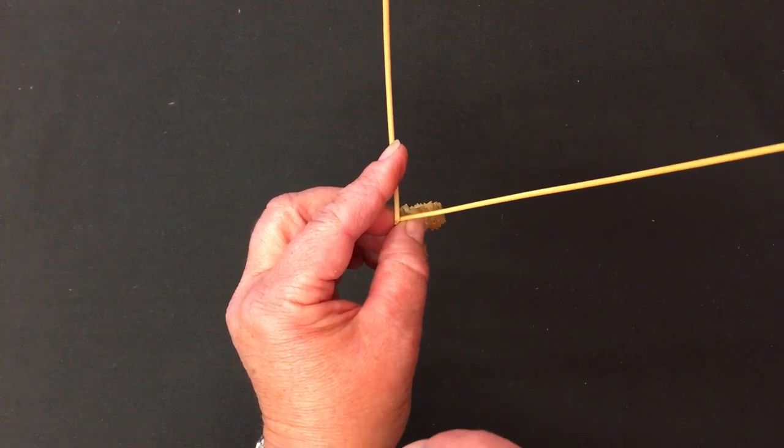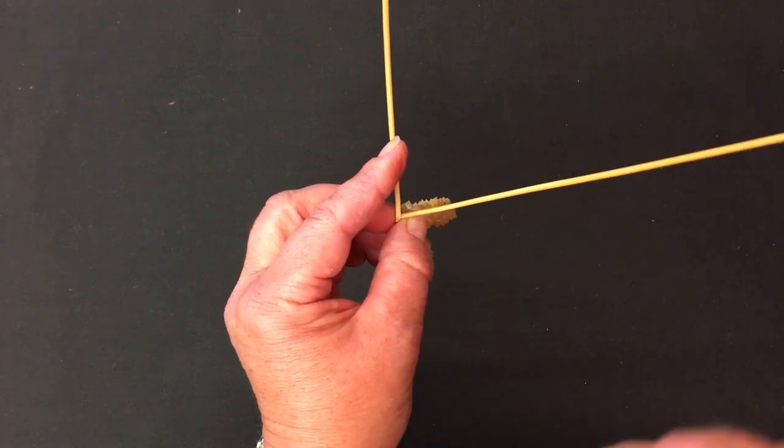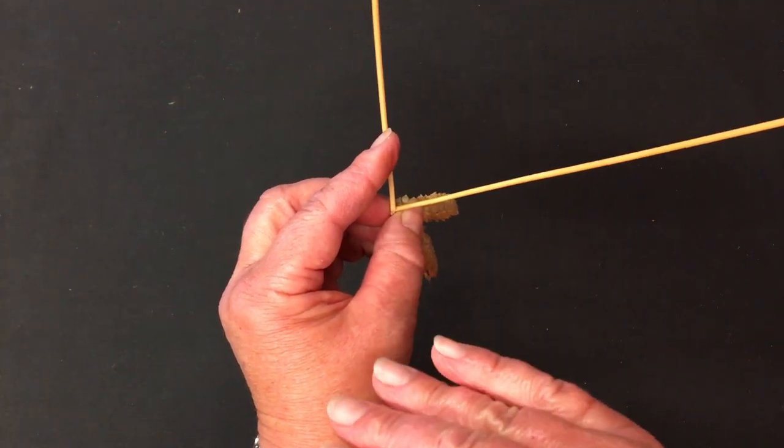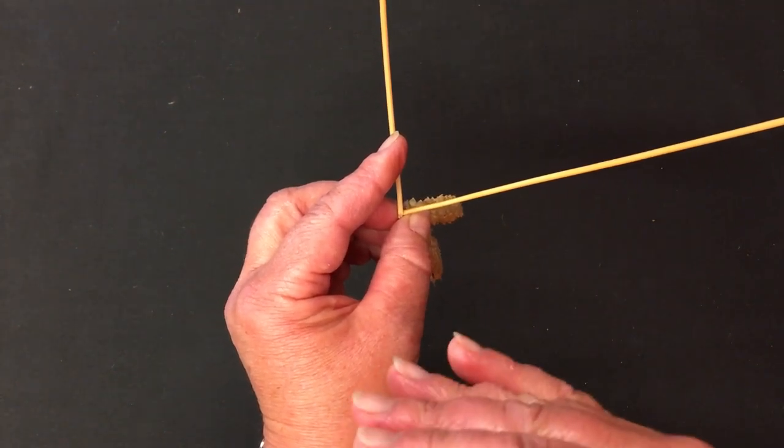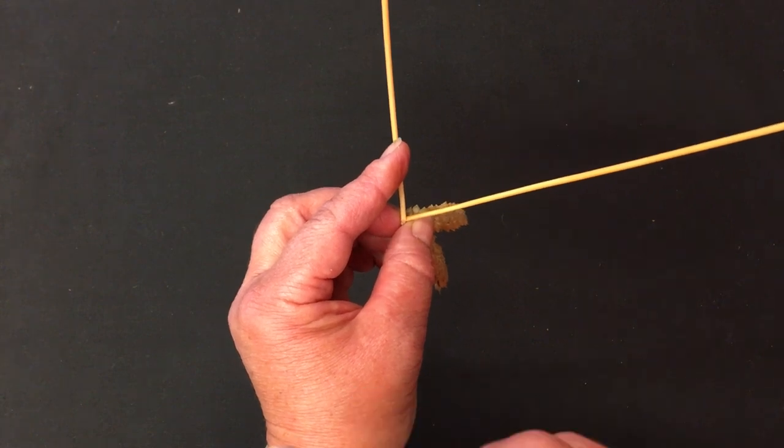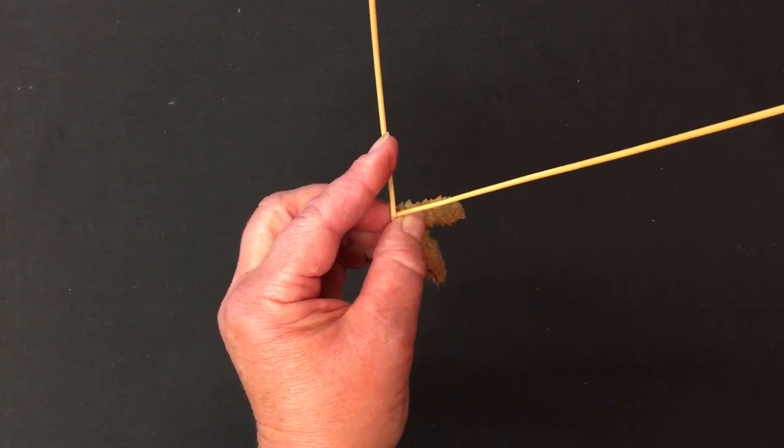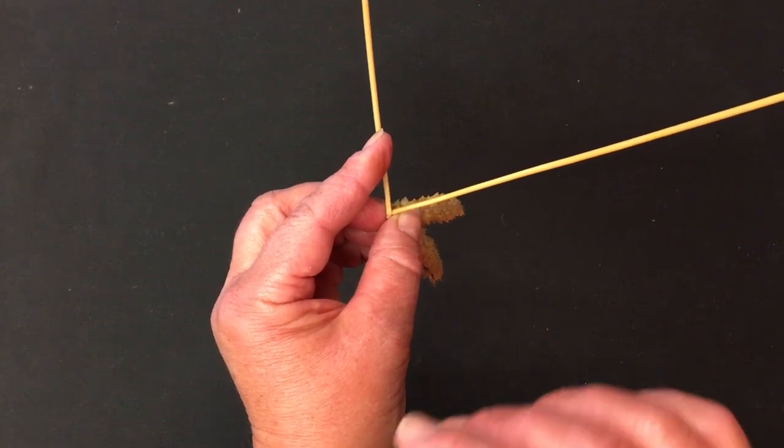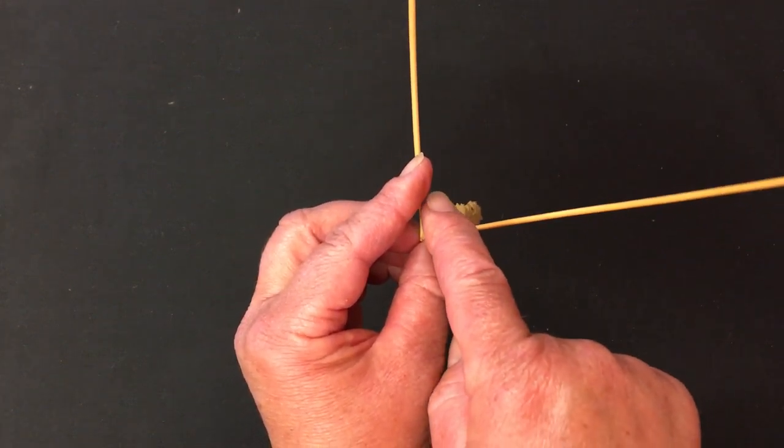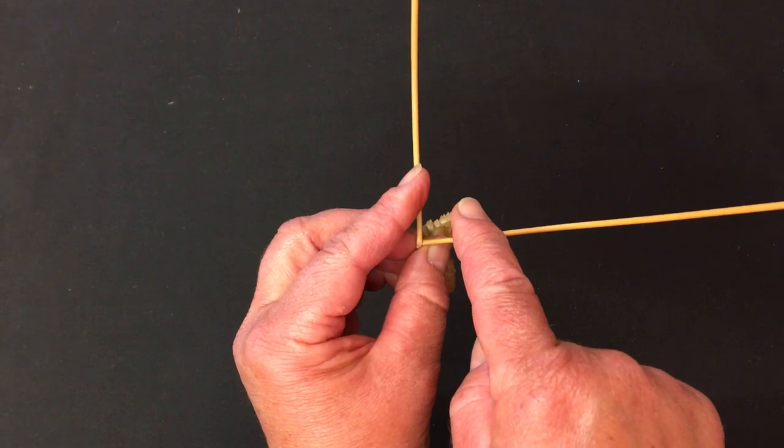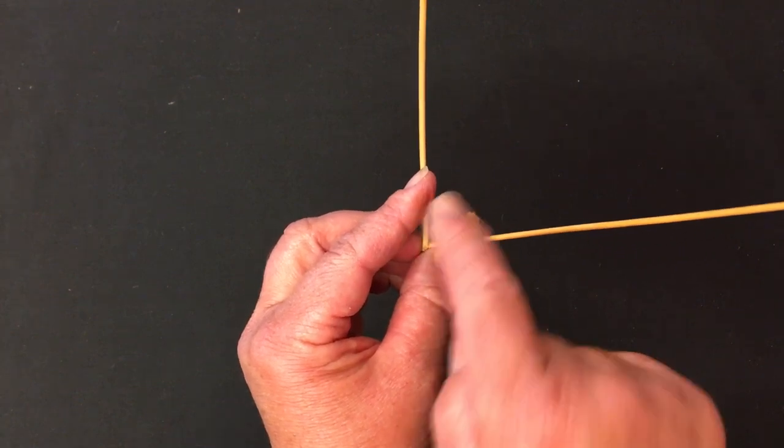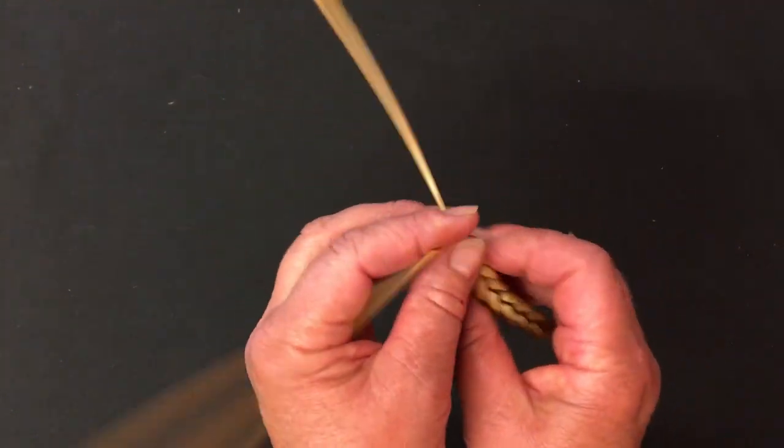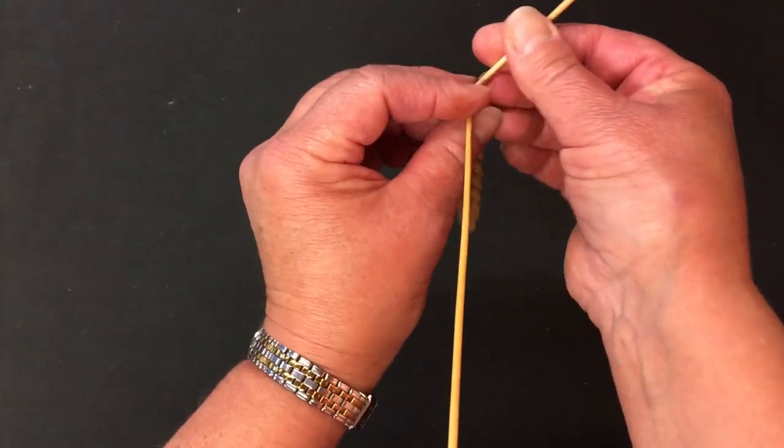But when you're doing a two-straw plait like this, you will always get a twist in your plait. I think one of the things that people often talk about with this plait is how to get a nice straight plait. So to get the nice straight two-straw plait, we actually work instead of the angle at 90 degrees—we work with the angle in here at 120. So let me just take out these two moves to sort the straws out for you.